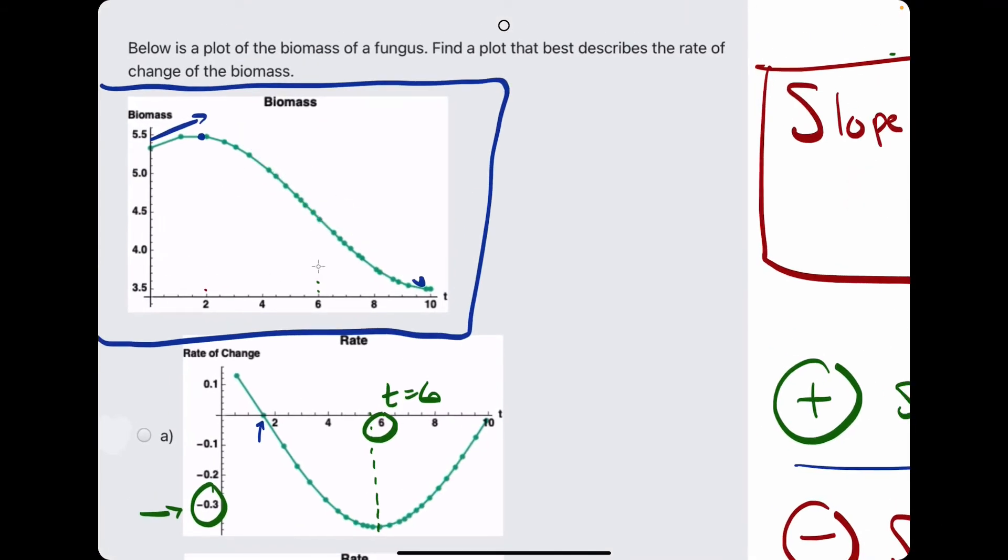At time 6, we can estimate the slope by picking points to the left and to the right. So, for example, we can say this point here is 4, 5 approximately. It has an x value of 4, y value of about 5. And then, say down here,